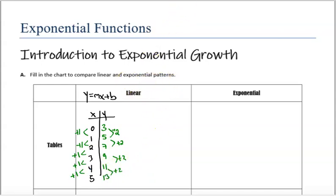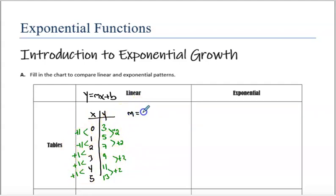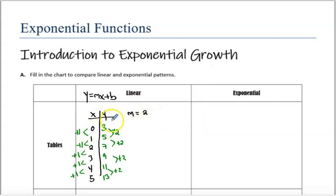So that's the linear function. This is adding 2. So as your x value increases by 1, your y value is increasing by 2. Your slope here would be 2 — your rise is 2, your run is 1, so 2 over 1 being the slope of this function. And it's constant throughout the entire table.